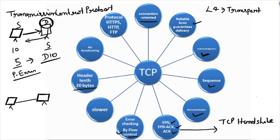That is why TCP has a 20-byte header. Also, TCP does not support broadcasting. Broadcasting means transferring your data from one source to everyone, like television. The protocols that work on TCP include HTTPS, HTTP, and FTP.